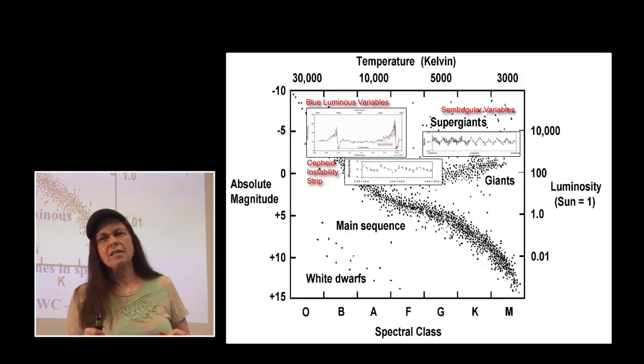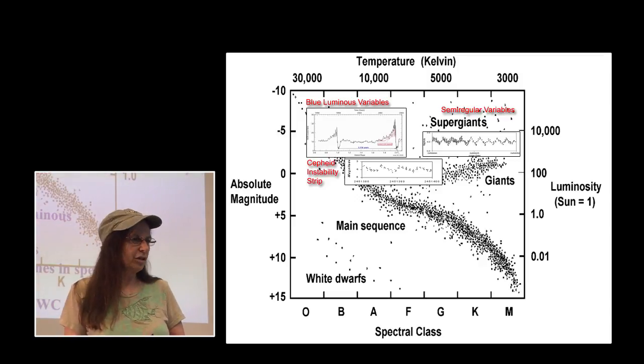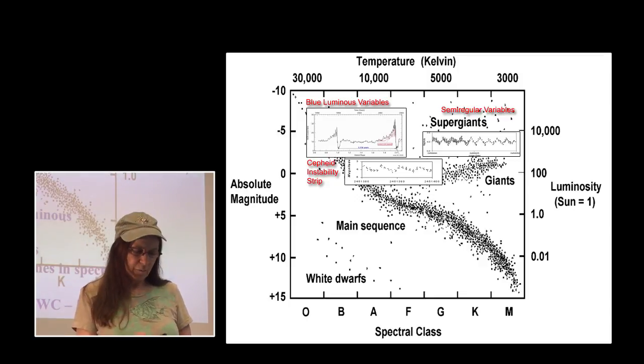Those are sometimes categorized as a Wolf-Rayet also. So there are other kinds of Wolf-Rayets. There are several different categories. The ones we're really concerned with here this year are the WN and the WC.